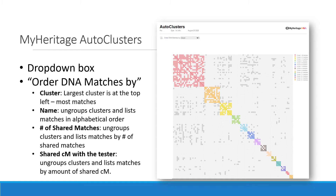With MyHeritage autoclusters, you're given a drop-down box at the top that lets you choose how you want to order your DNA matches. Just look for the words that say 'order DNA matches by' and then look at that drop-down box for your choices. They are automatically ordered by cluster, which means the largest cluster is in the top left — the cluster with the most matches. You can choose to group the clusters by name, number of shared matches, and shared centimorgans with the tester. But this actually ungroups the clusters and lists the matches in alphabetical order, by number of shared matches, or by number of shared centimorgans. So you really only want to choose the first option, 'order DNA matches by cluster,' because that's what helps you see who all descend from a common ancestral couple.